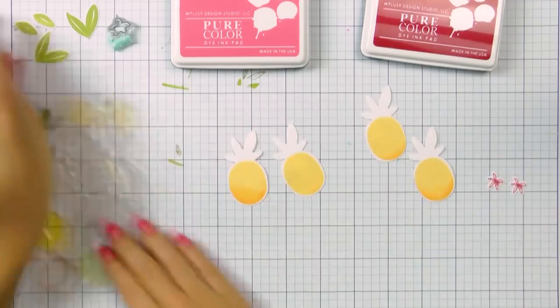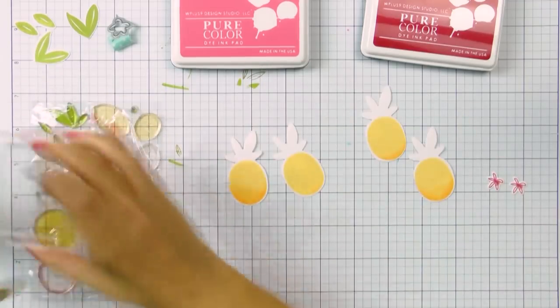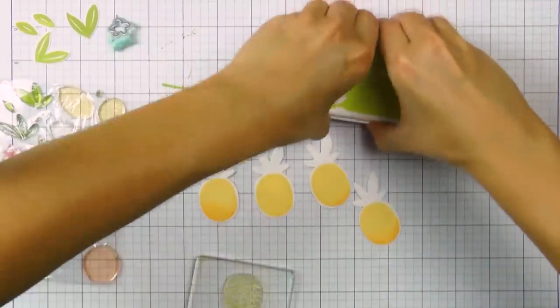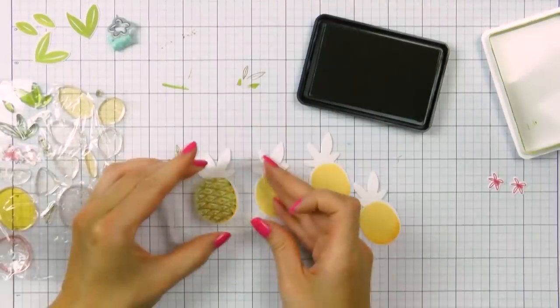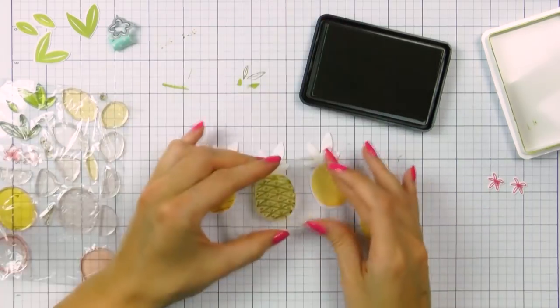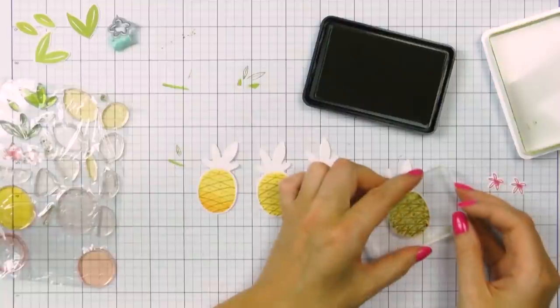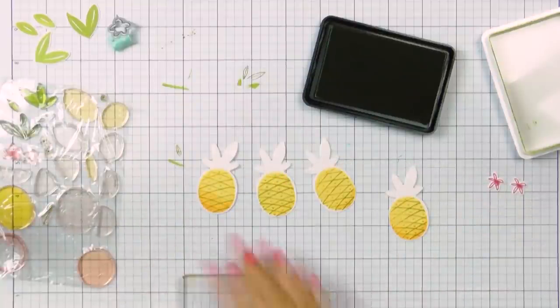Now the reason I die cut the pineapples before I added the pineapple crowns to them is because the crown comes as a separate stamp. And to make sure I stamped it exactly where it needed to be, I die cut the image out first and then I stamped the crown.